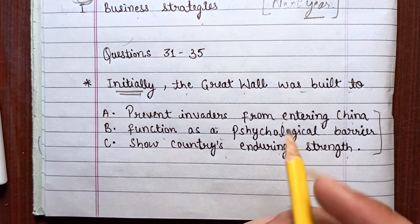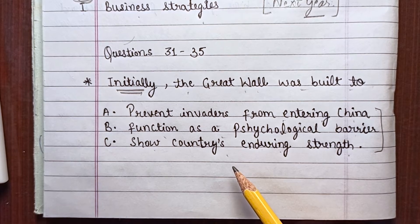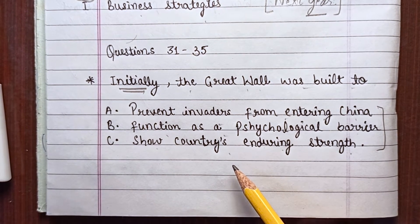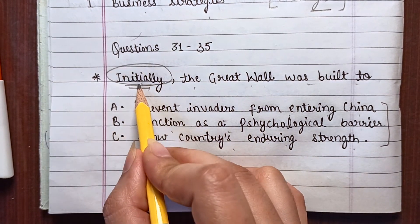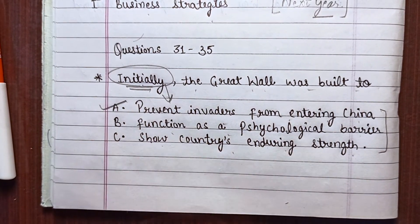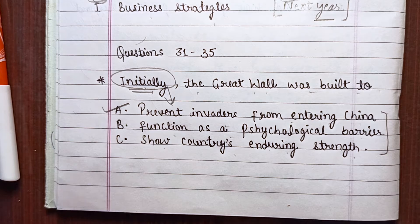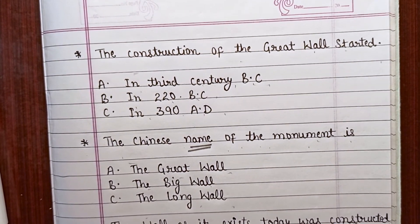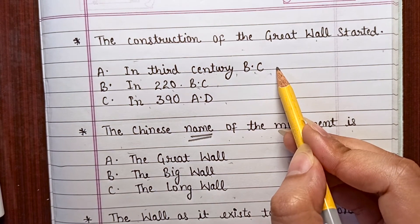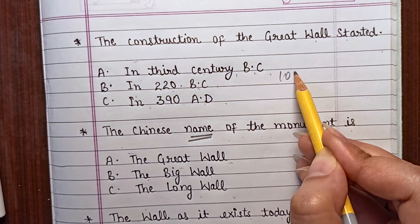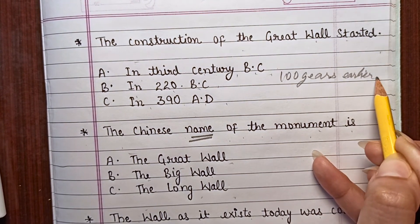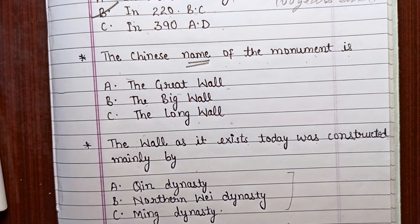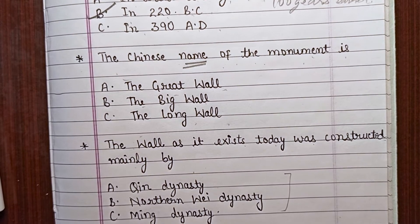Now let's move on to the next questions. We will read all the questions first so that we do not get confused. Question 1: Initially, the Great Wall was built to — prevent invaders from entering China / function as a psychological barrier / show the country's enduring strength. Question 2: The construction of the Great Wall started in — 3rd century BC / 220 BC / 390 AD. Question 3: The Chinese name of the monument is — the Great Wall / the Big Wall / the Long Wall.